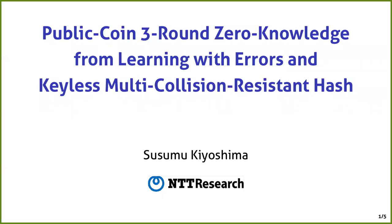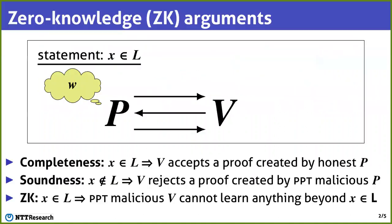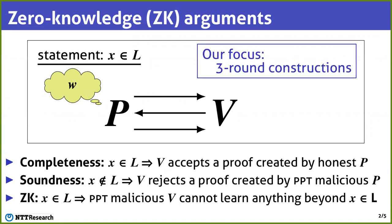Hello everyone. I'm Susumu Kiyosima from NTT Research. I'm going to talk about my recent work about public coin 3-round zero-knowledge argument. Recall that in a zero-knowledge argument, a prover can convince a verifier of the correctness of a statement without revealing anything beyond the fact that the statement is true. The focus of this work is 3-round construction of zero-knowledge argument.